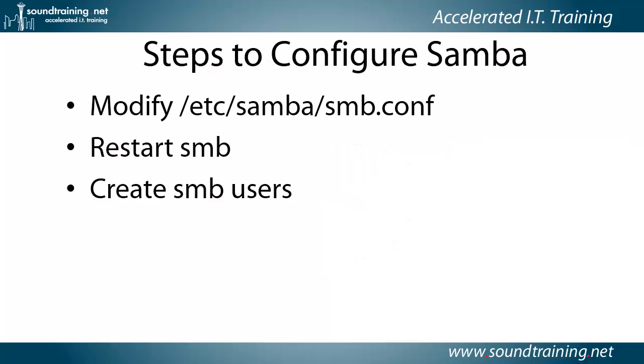The steps to configure Samba are really pretty straightforward. You modify /etc/samba/smb.conf, you restart SMB, and you create the SMB users. If you do it all correctly, your Windows clients will be able to access the shares.